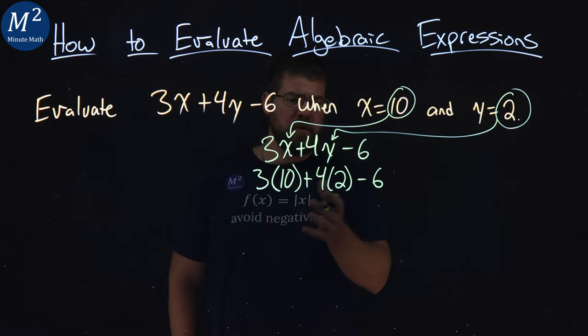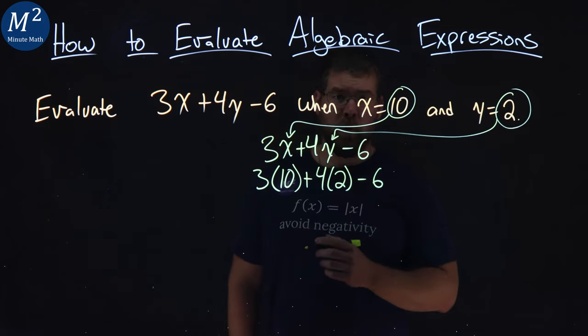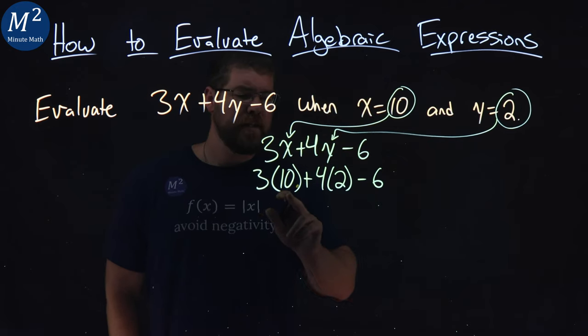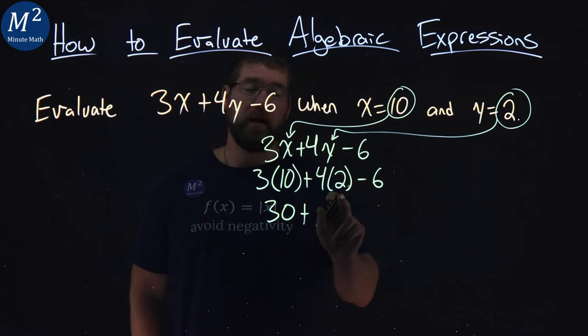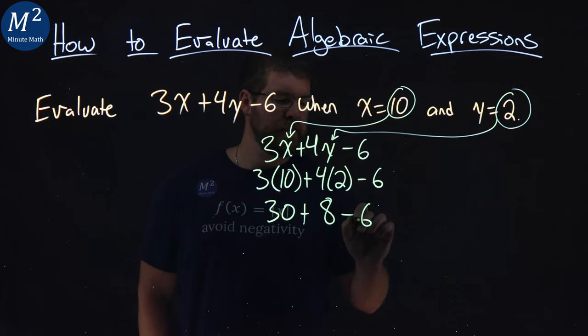From there, we just need to simplify using our order of operations. 3 times 10 comes first, is a 30. Plus 4 times 2 is an 8. Minus the 6.